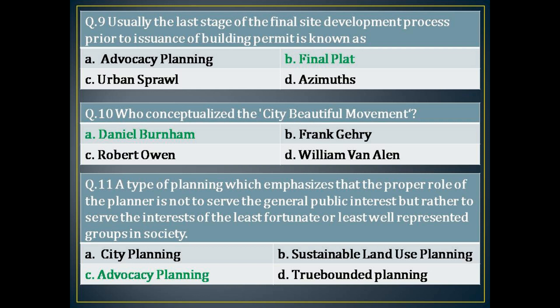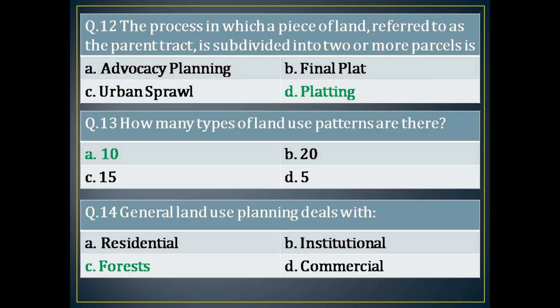The tenth question: who conceptualised the city beautiful movement? The answer is: Daniel Burnham. The eleventh question: a type of planning which emphasises that the proper role of the planner is not to serve the general public interest, but rather to serve the interests of the least fortunate or least well-represented groups in society. The answer is: advocacy planning.